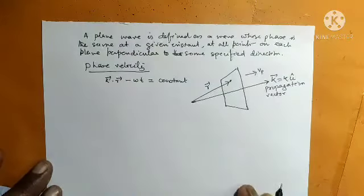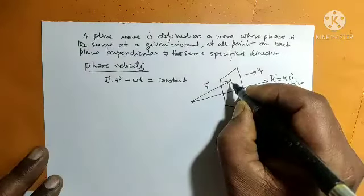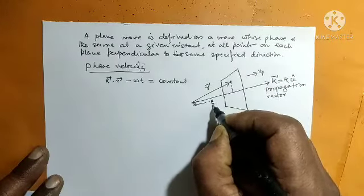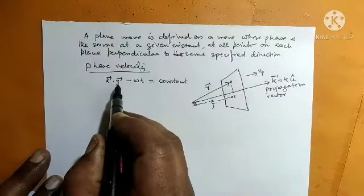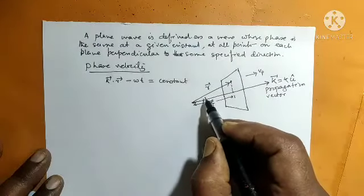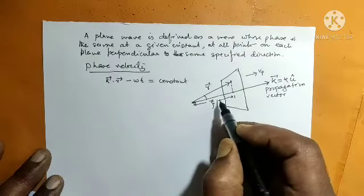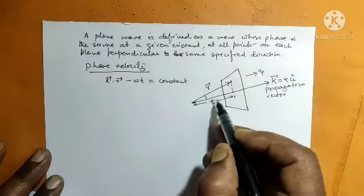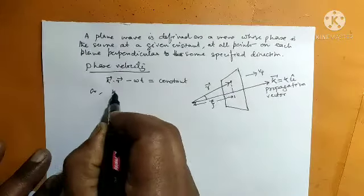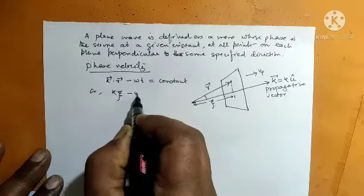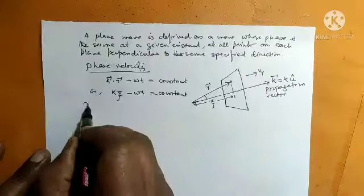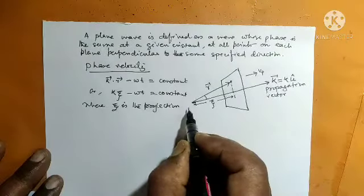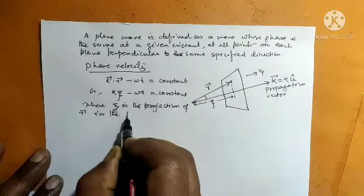K dot R minus omega T equals constant. Now we take the projection of R in the direction of K. This projection is represented by the symbol Xi. So K dot R equals K R cos(theta), and R cos(theta) is Xi. So we can write K Xi minus omega T equals constant, where Xi is the projection of the position vector R in the K direction.